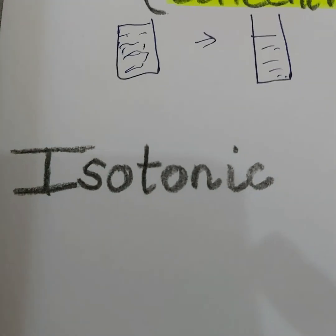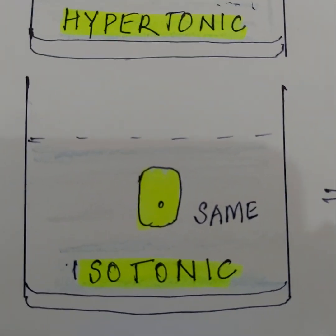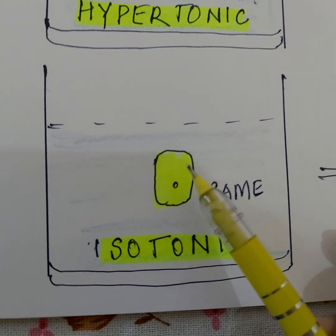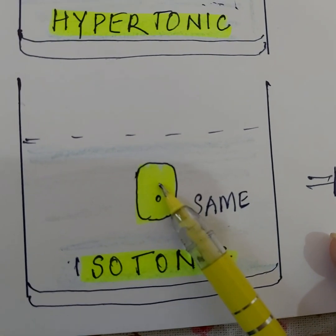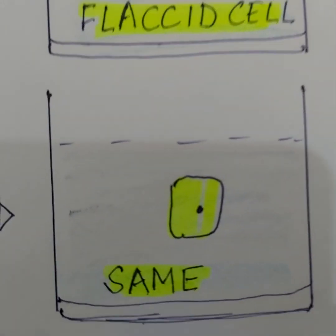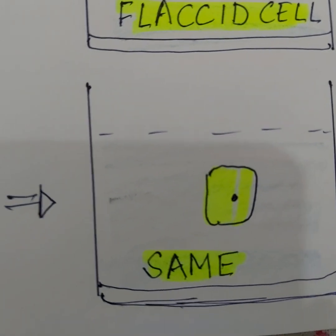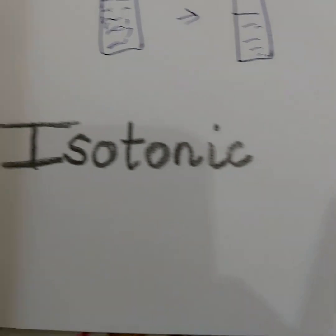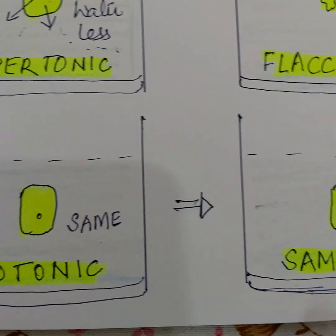The last type is an isotonic solution — a balanced solution where water concentration outside and inside the cell is equal. Since no concentration gradient develops, no movement across the membrane takes place and the cell remains as it is: neither shrinking nor swelling. Generally, whenever we want to preserve cells, we place them in isotonic solution so that they remain unchanged.